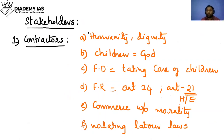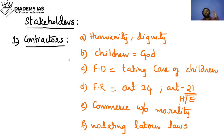Identify the stakeholders: the poor people, the girl child, the government, the NGOs, and you as the Collector. Now, the ethical issues with respect to each stakeholder — for contractors: they are not displaying the quality of humanity or dignity of labor.